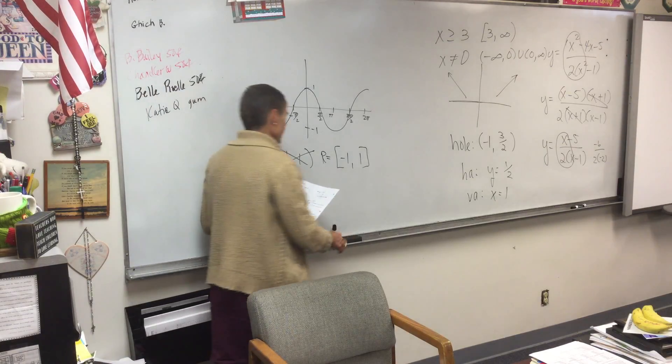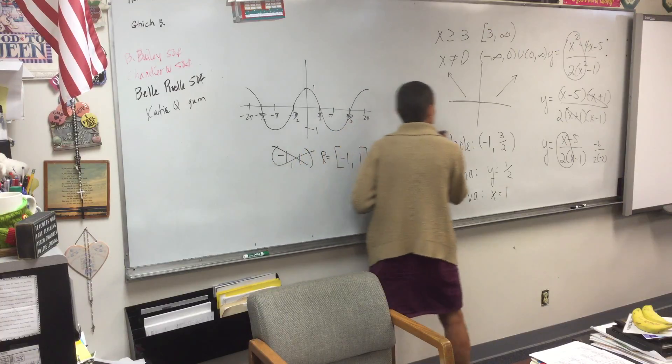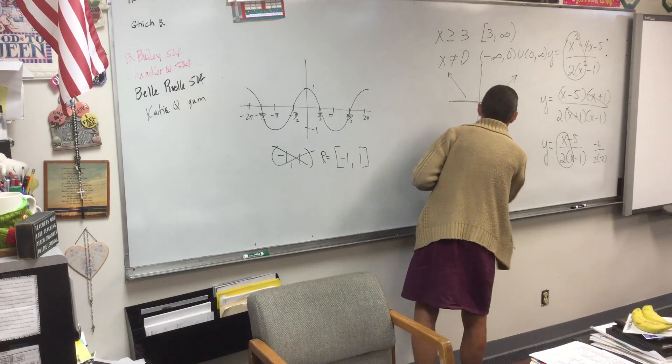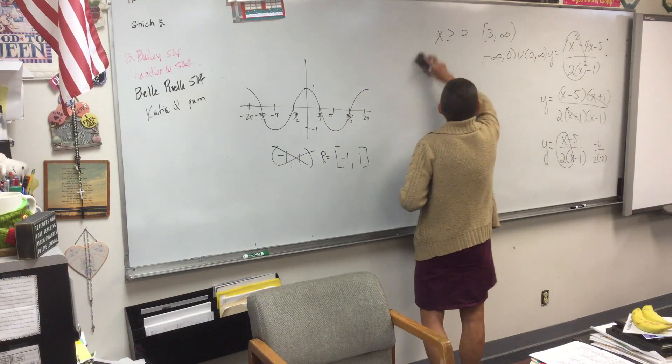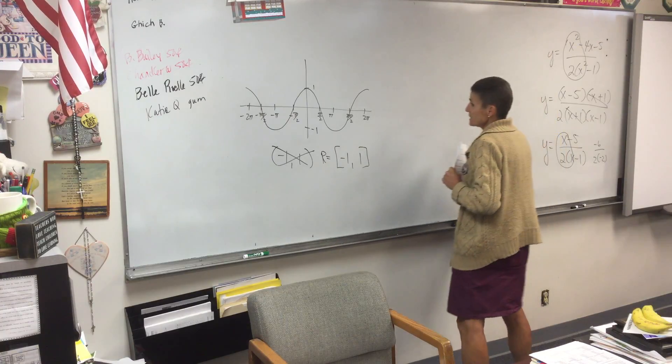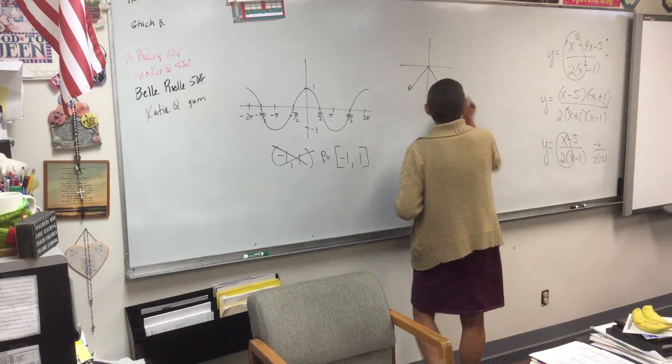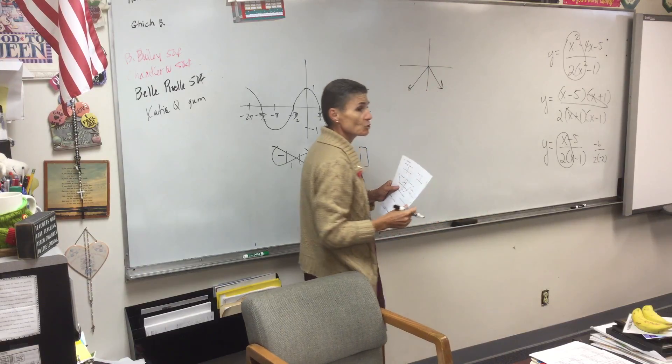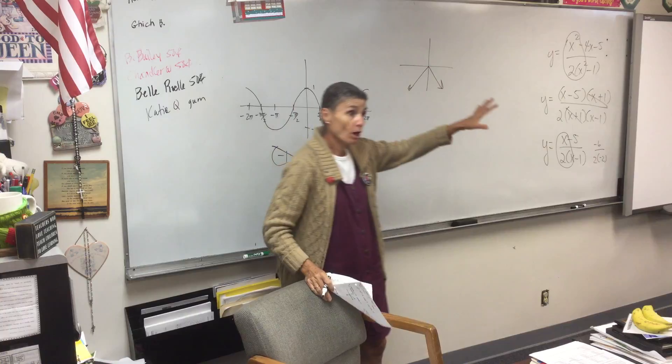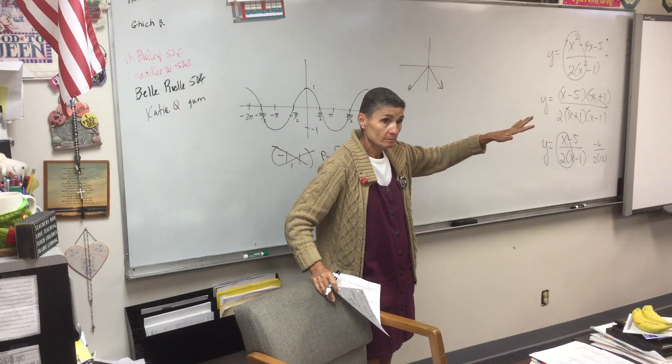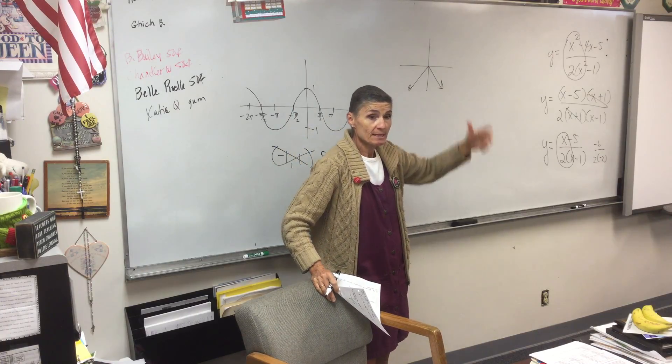We kind of already talked about V before we took the quiz. What does it look like? It's an absolute value facing first. It's an absolute value V. And it's turned upside down. Because when you put a negative in front of the function, it turns it upside down.